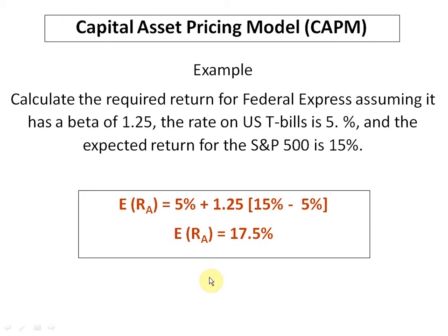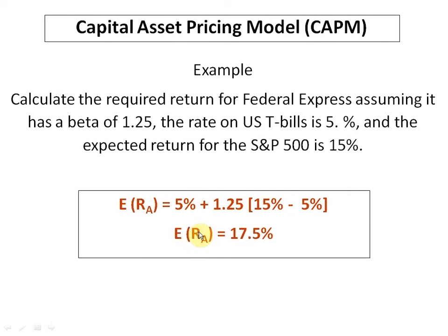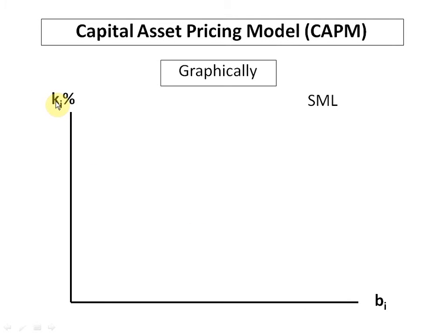Now let us depict these results on a graph. On the x-axis we are denoting the beta, or the level of systematic risk. On the y-axis we are measuring the expected return, denoted here by the letter K — which means the same thing as ERA from the previous slide. Now let us build in our data components. The first thing we write on the y-axis is the risk free rate of return, 5%. The second is the return in the marketplace, 15%. On the x-axis, we write the market beta, which by default is equal to 1.